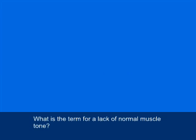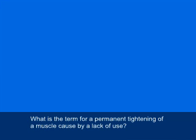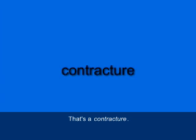What is the term for a lack of normal muscle tone? That's atonia, A-T-O-N-I-A. What is the term for a permanent tightening of a muscle caused by a lack of use? That's contracture, C-O-N-T-R-A-C-T-U-R-E.